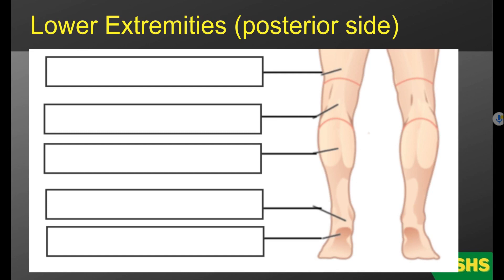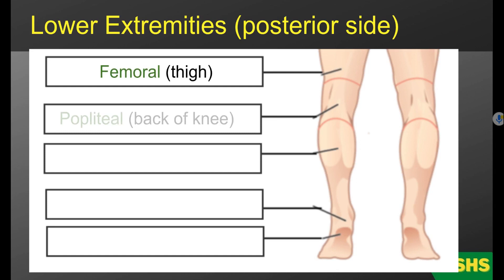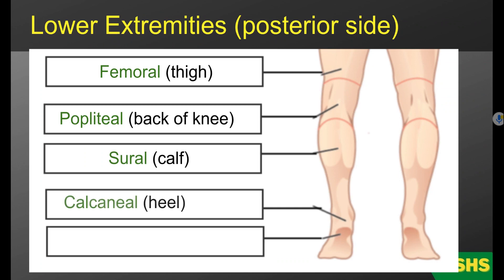On the posterior side, you have femoral — that's the thigh. Popliteal is the back of the knee. Sural is the calf. Calcaneal is the heel. And plantar is the sole of the foot. To sum up, we've talked about the major components of the body — the axial and appendicular components — and we've discussed specific regions in each of those major components.